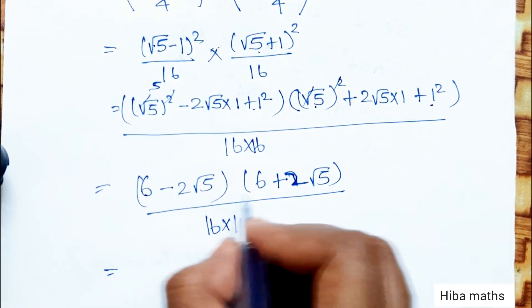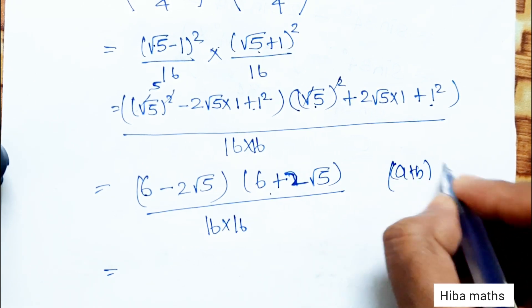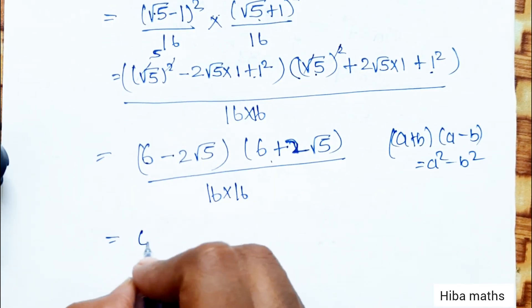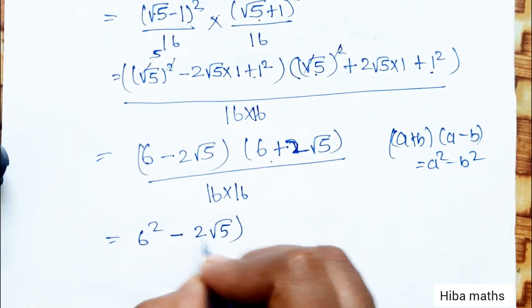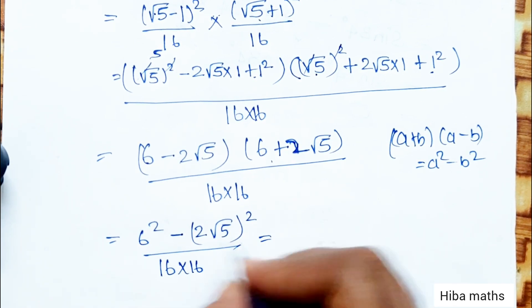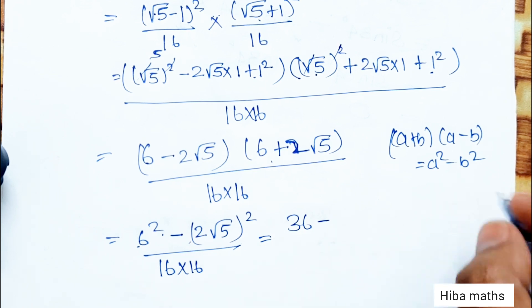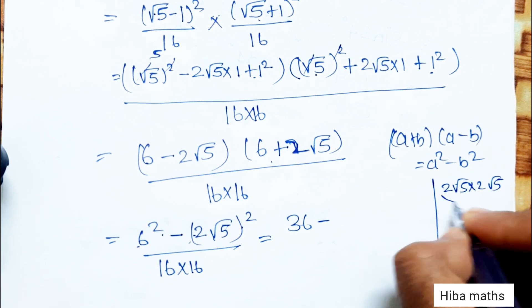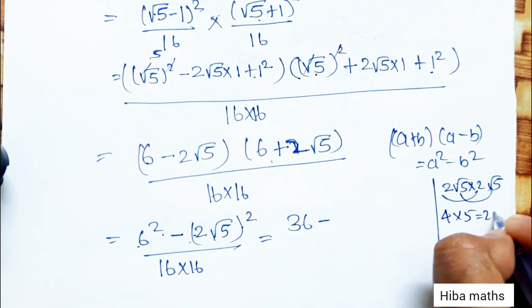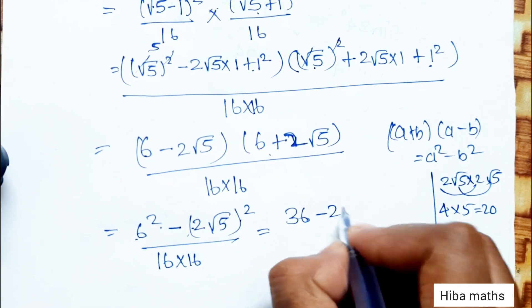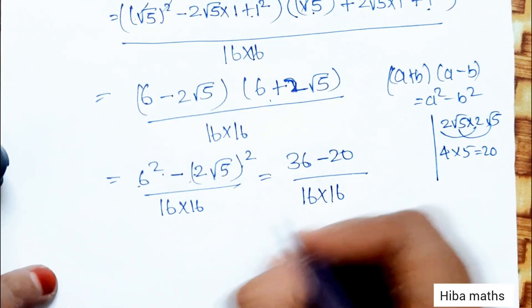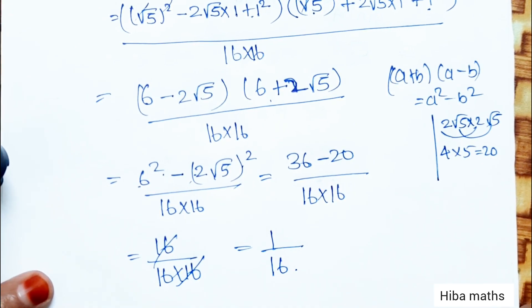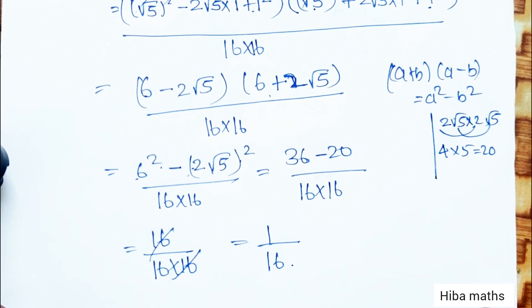Applying the formula (a + b)(a - b) = a² - b²: we get 6² - (2√5)² = 36 - (4 × 5) = 36 - 20 = 16. So the result is 16 / 256 = 1/16. This proves the given expression equals 1/16. Thank you so much for watching.